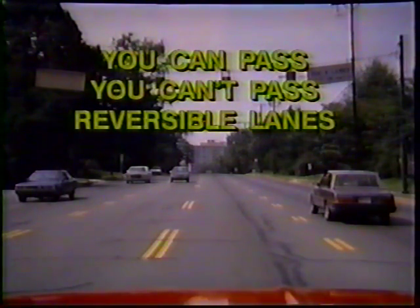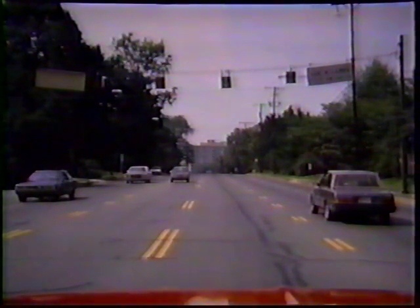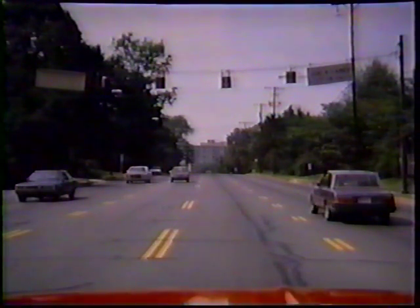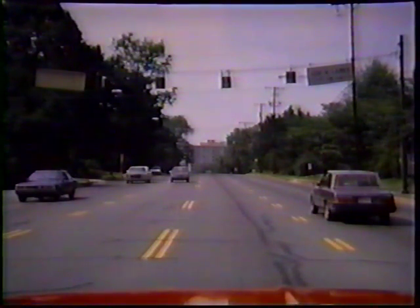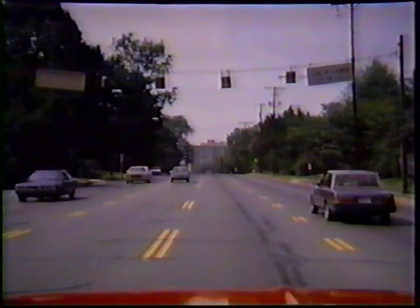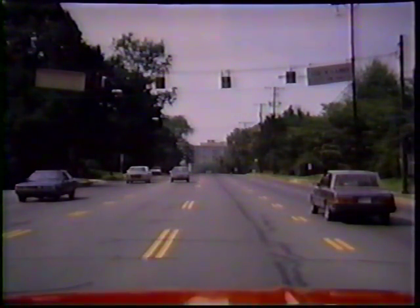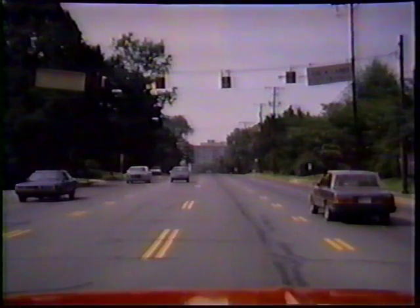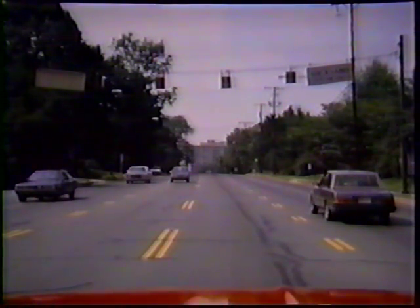Reversible lanes change the direction of traffic flow and are used by vehicles going one way in the morning and the other way in the evening. When you see these lane markings, look for signs that tell you: one, which lane or lanes can be used; two, during what time; and three, any vehicle restrictions. To help avoid head-on collisions, reversible lanes are marked with overhead signs, lane markings, and overhead lights. A green arrow or green X means the lane is open; yellow X means traffic is about to end; flashing yellow X means left-turning vehicles only; red X means the lane is closed.